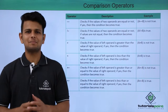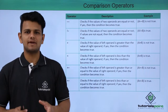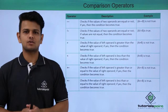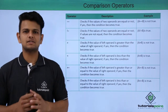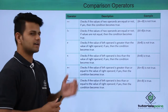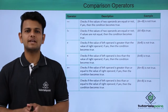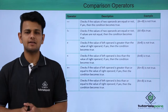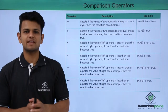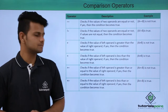The first comparison operator is a double equal to operator which checks if two values are equal. The second operator is a not equal to operator which checks whether the two values are not equal. The third operator is a greater than operator which checks whether the two values have a relation of greater than. The fourth operator is a smaller than operator which checks whether the first value is smaller than the second value.